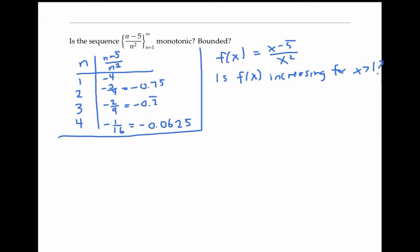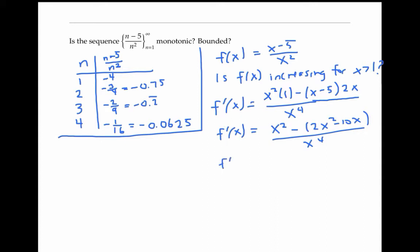So let me take the derivative using the quotient rule and simplify. I get that f prime of x is equal to minus x squared plus 10x over x to the fourth.